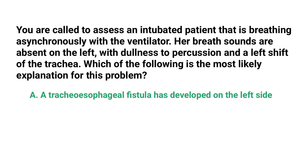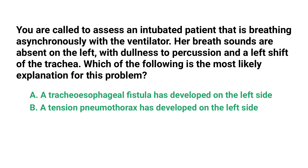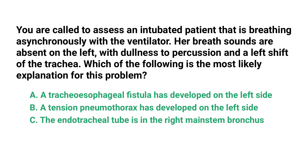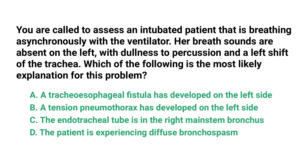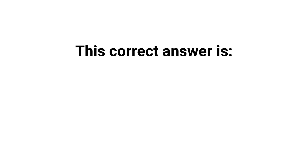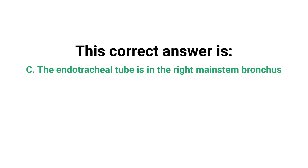B: a tension pneumothorax has developed on the left side; C: the endotracheal tube is in the right mainstem bronchus; or D: the patient is experiencing diffuse bronchospasm. The correct answer is C — the endotracheal tube is in the right mainstem bronchus.